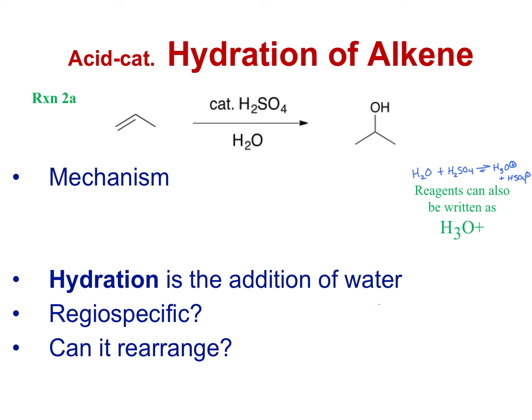The very first thing that's going to happen is our nucleophile — the double bond — is going to attack an H+. The H+ comes from the acid, but you can just write H+ since it's a strong acid that will dissociate in water. That makes the intermediate, which is a carbocation. We know to make the best carbocation, we're going to put the positive charge on the more substituted carbon.